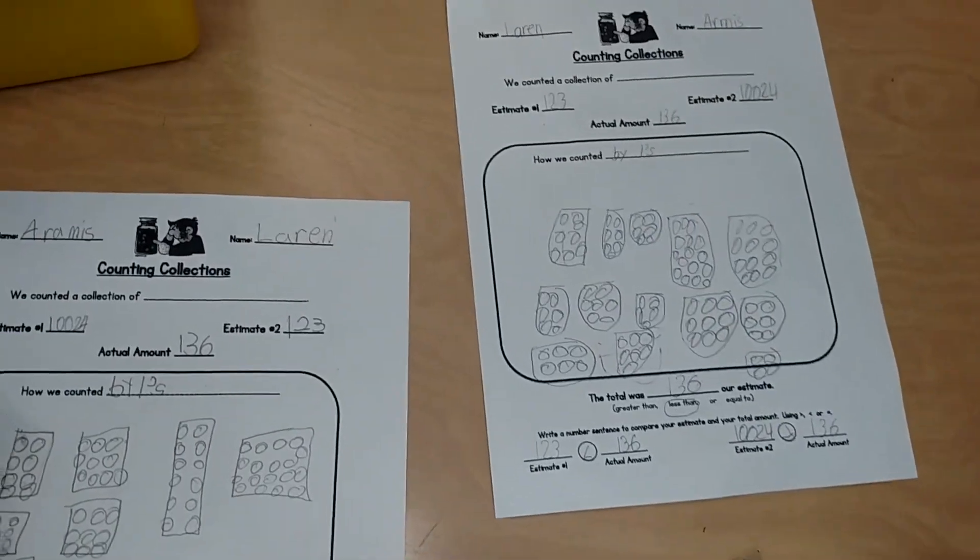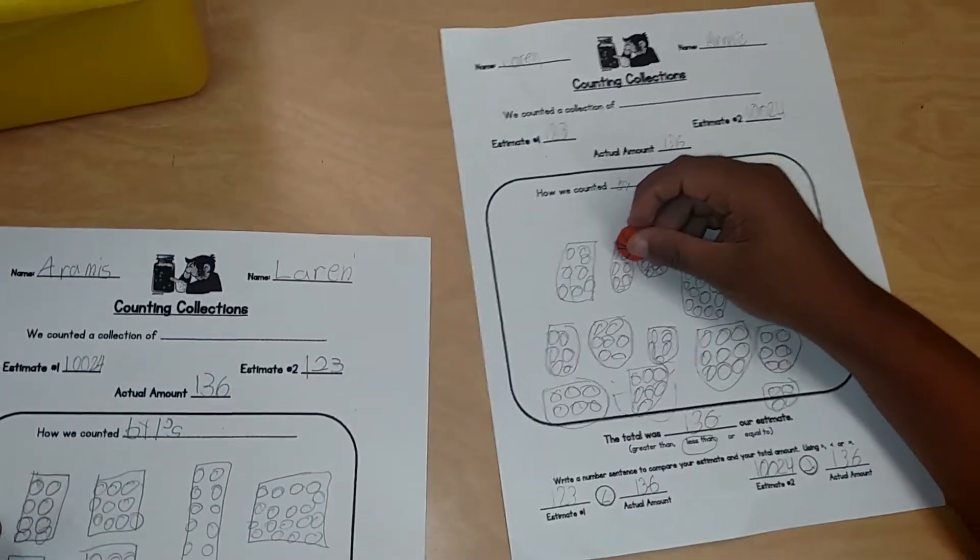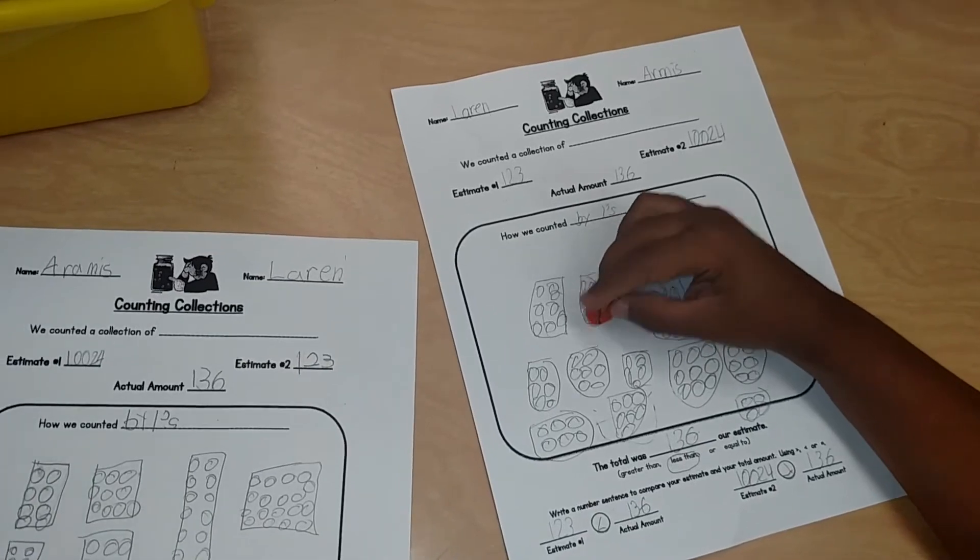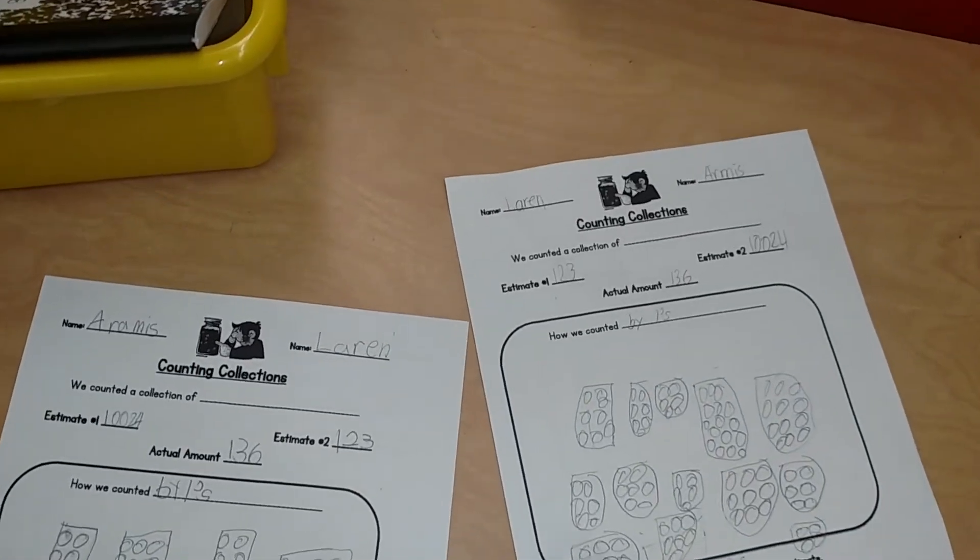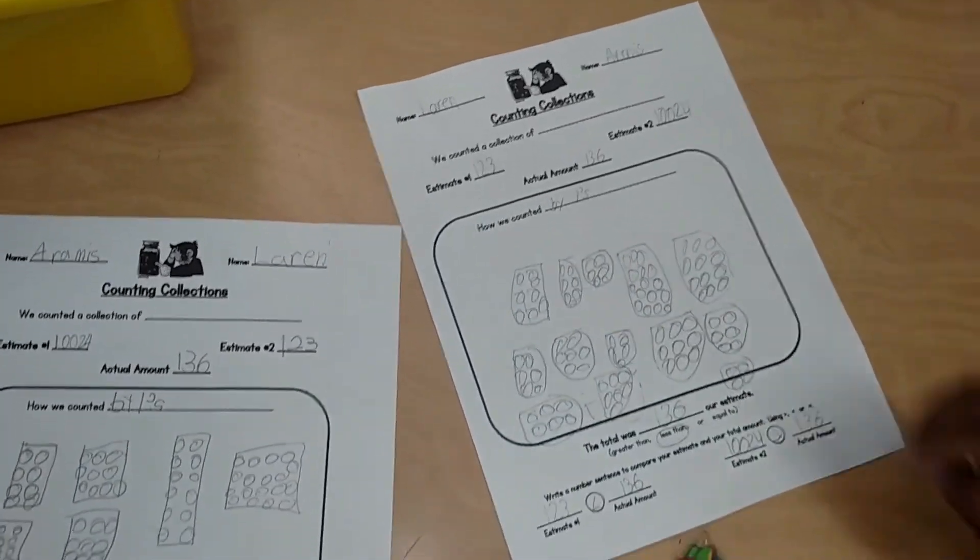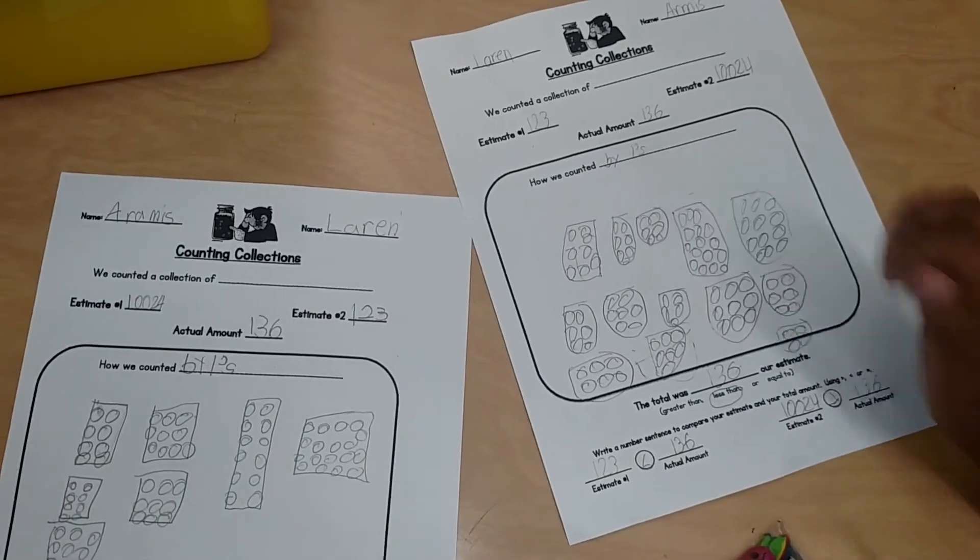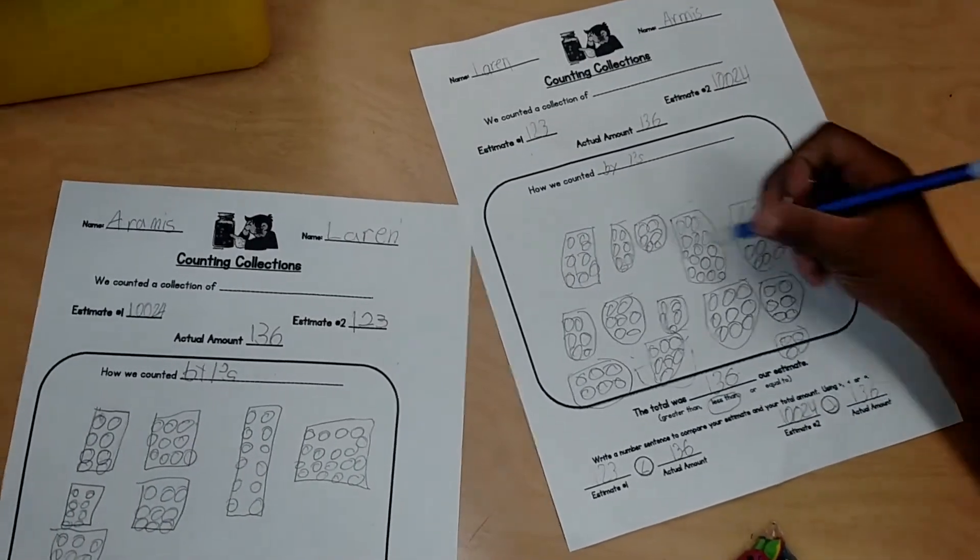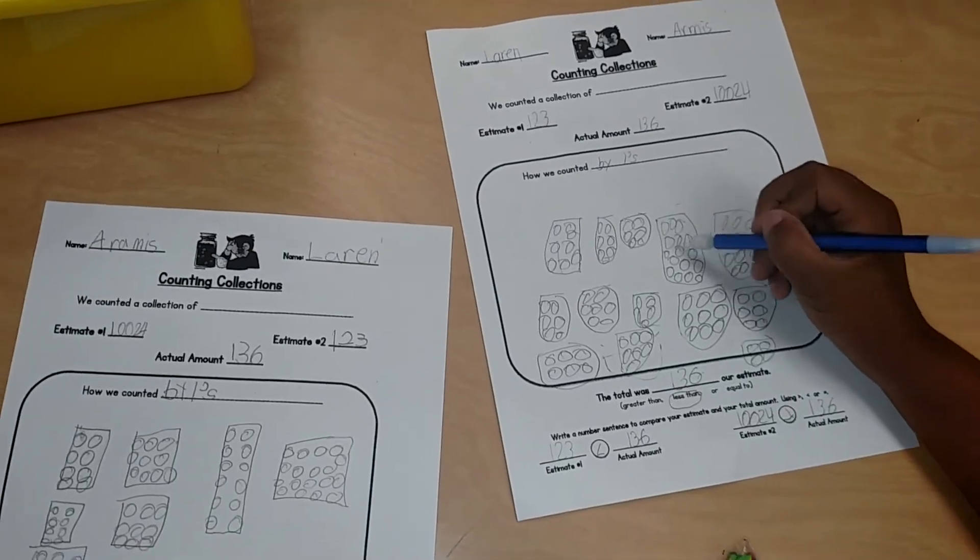Because how many is in this one? Eight. Eight. And then how many is in this one? Six. Six. Okay. And then this one? Six. And the next one? Five. Five.